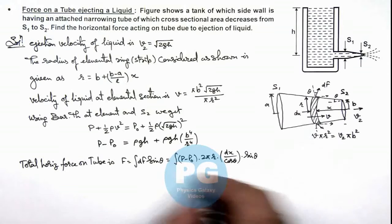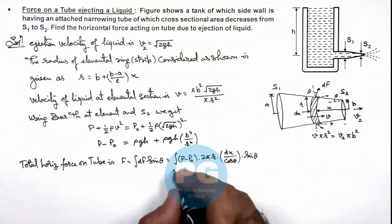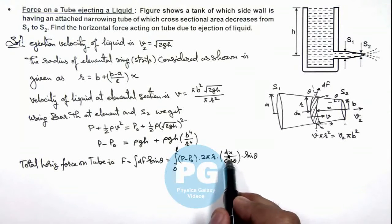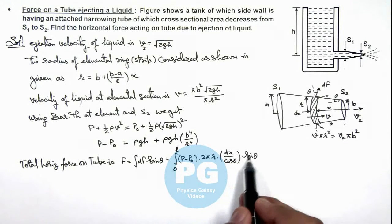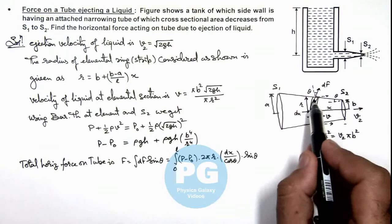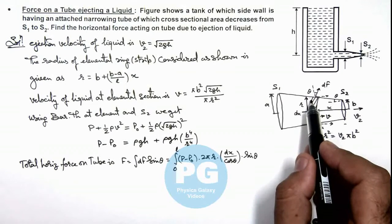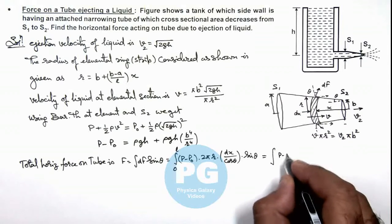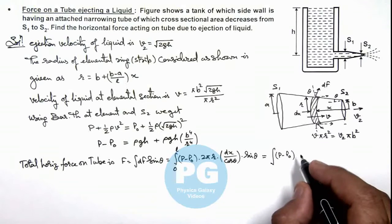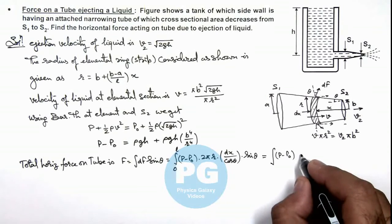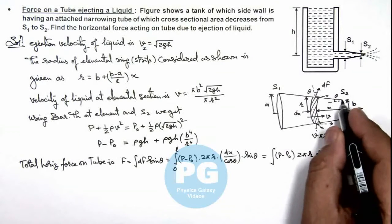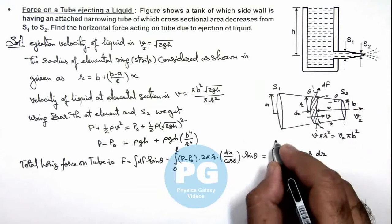Here x we integrate from zero to the total length of the tube. But rather than integrating it in dx, you can see the value of dx·tan(θ), where sin(θ)/cos(θ) is tan(θ). So dx·tan(θ) will be the elemental increase in radius we are getting. So we can write this value as integration of (p - p₀) multiplied by 2π·r·dr, and the limits of radius from one point to another we can change from a to b.